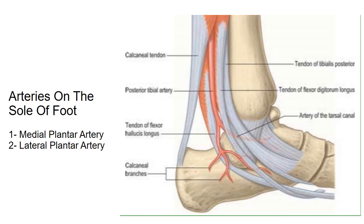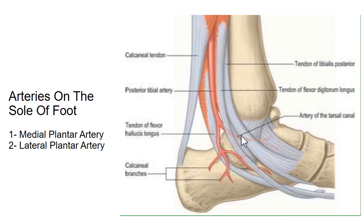As I have already told you in my previous lecture, the popliteal artery gives off two branches: the anterior tibial artery and the posterior tibial artery. The posterior tibial artery runs in the posterior compartment of the leg. This posterior tibial artery then passes deep to the flexor retinaculum in the tarsal tunnel, which is the osteofibrous tunnel deep to the flexor retinaculum.